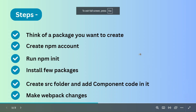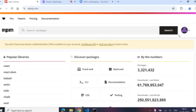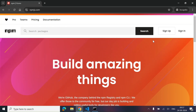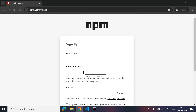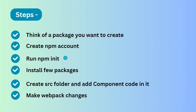Before moving ahead, let's have a look at some key points — the steps we are going to perform. First, we need to think of a package we want to create. I am going to create a loading spinner that we use very often. Second, we need to create an npm account. I have already created one — you simply go to the npm site and click on sign up to create an account.